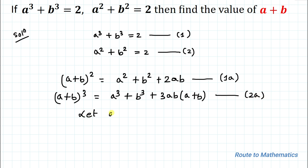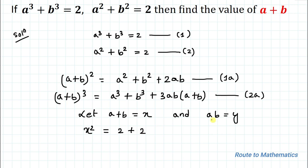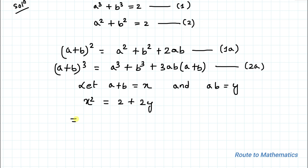In the next step, let's take a + b as x and ab as y. Substituting into equation 1a, we get x² = (a² + b²) + 2y. From equation 2 we have a² + b² = 2, so x² = 2 + 2y. Taking all terms to the left-hand side: x² - 2y - 2 = 0. Let's call this equation 1b.